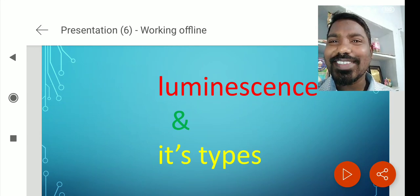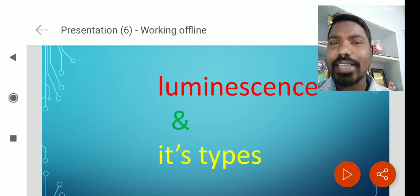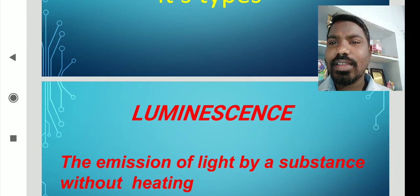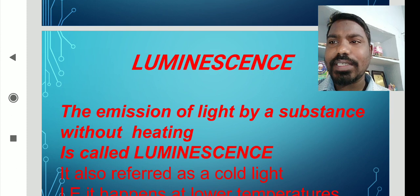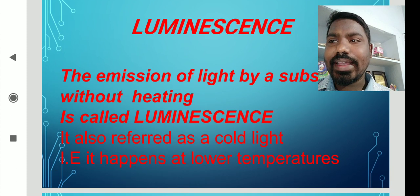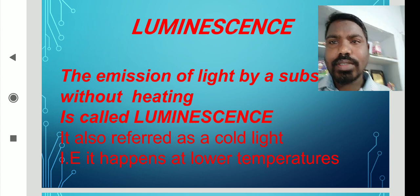Hi, good morning. This is Sridhar. Welcome to today's topic about luminescence and its types. The emission of light by a substance without heating is called luminescence. It is also referred to as cold light, meaning it happens at low temperature — without heating, a light is produced.